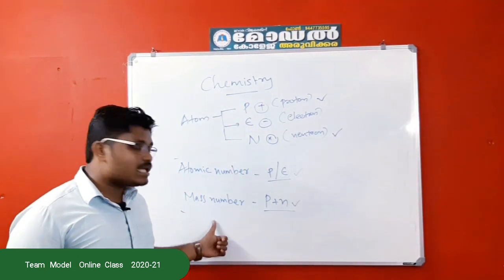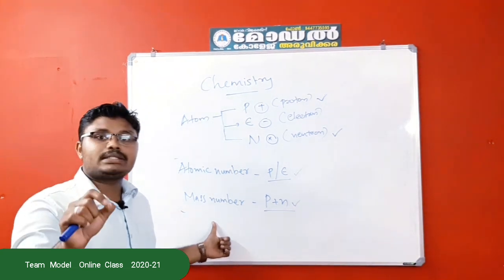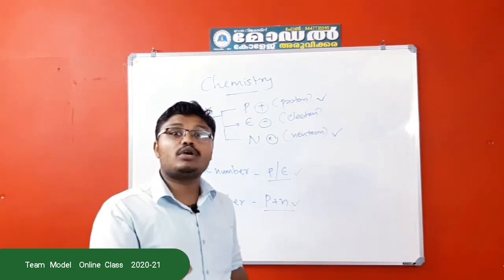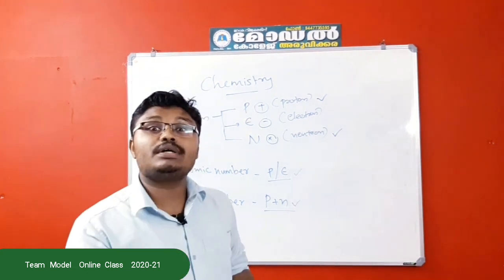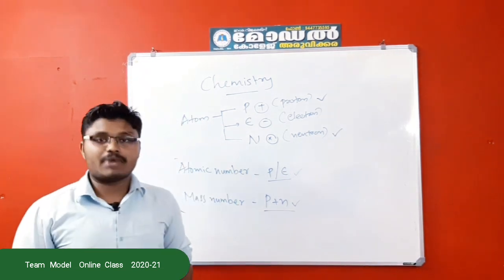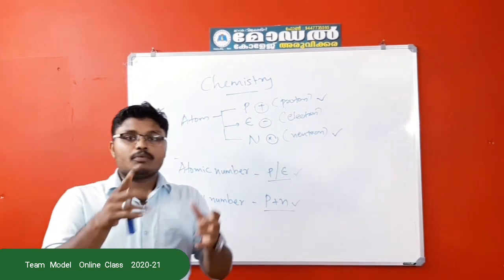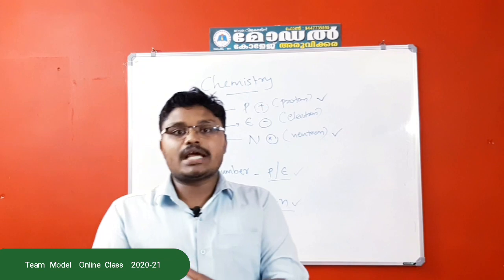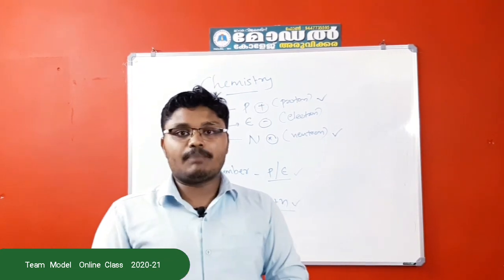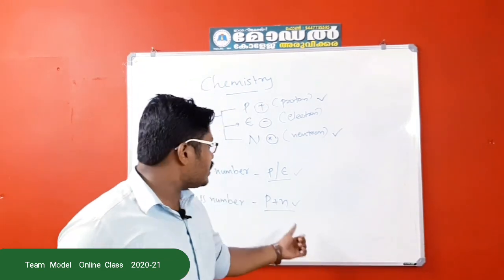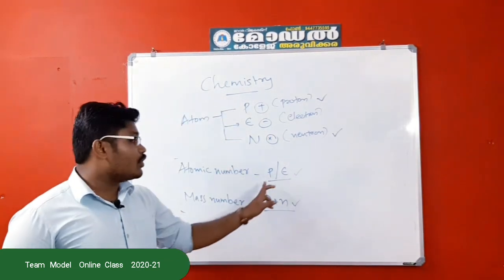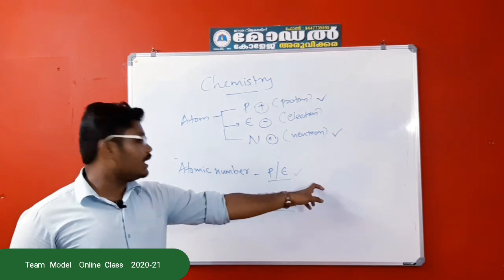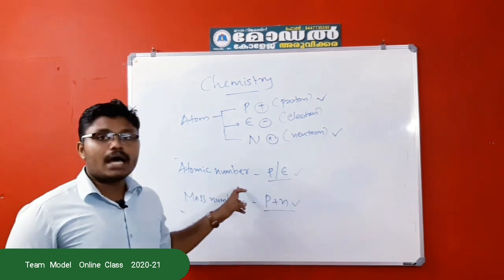What is the mass number? The mass number is defined as the sum of protons and neutrons. Protons and neutrons together give us the mass number. Protons and electrons together give us the atomic number.